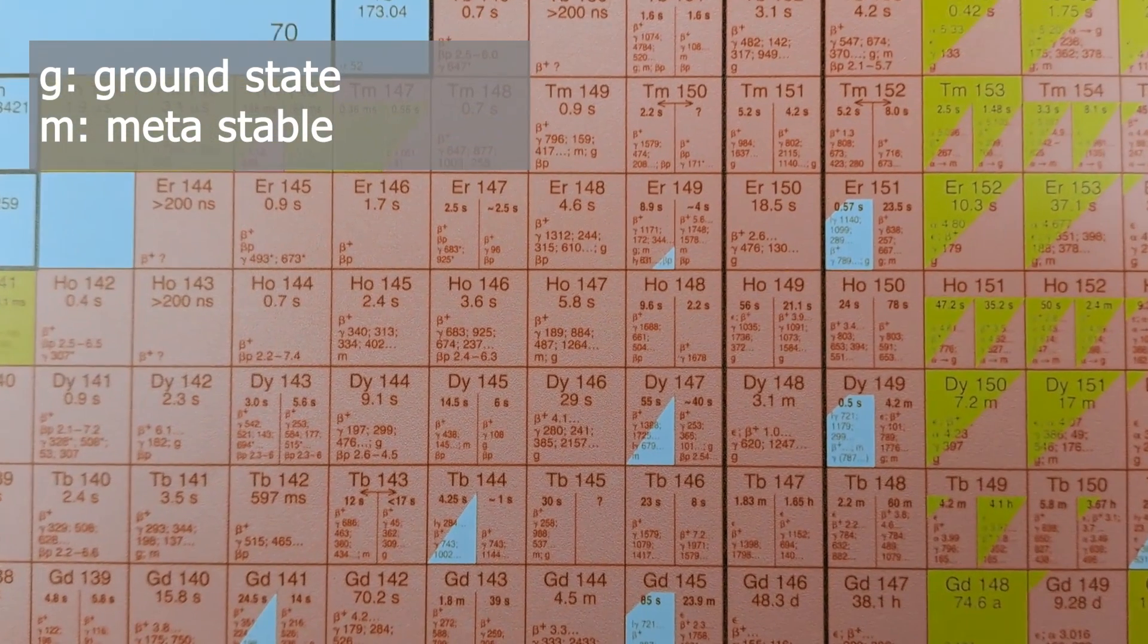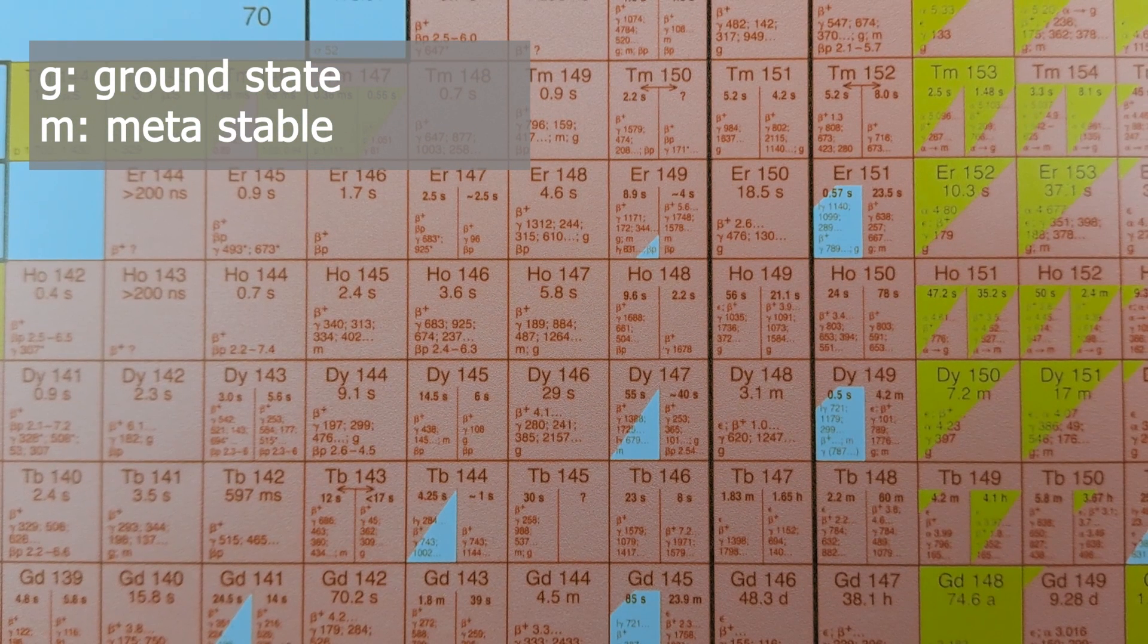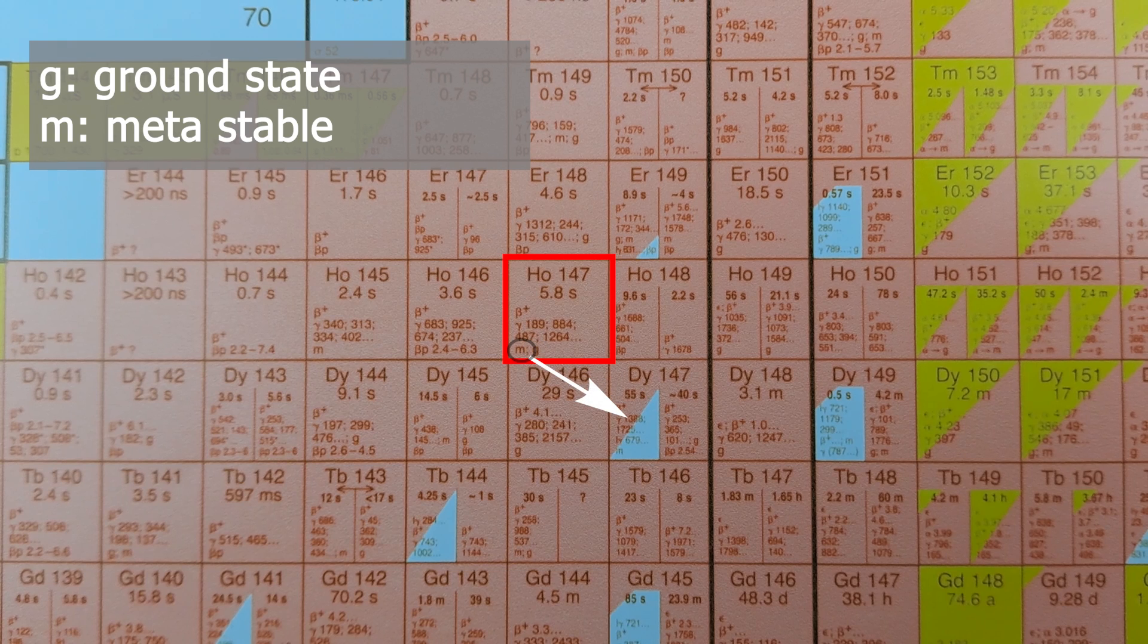Let's start with G and M. G stands for ground state and M stands for metastable state. This refers not to the decaying nucleus, but to the daughter nucleus. So Holmium-147 can decay via beta plus to either Dysprosium-147M or Dysprosium-147G. In fact, we can further deduce that it's more likely to decay into Dysprosium-147M since the M is listed before the G.